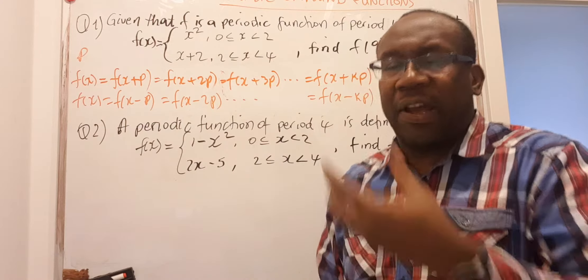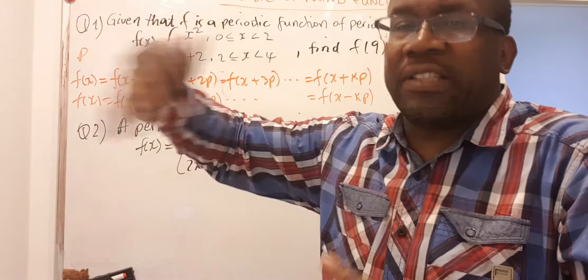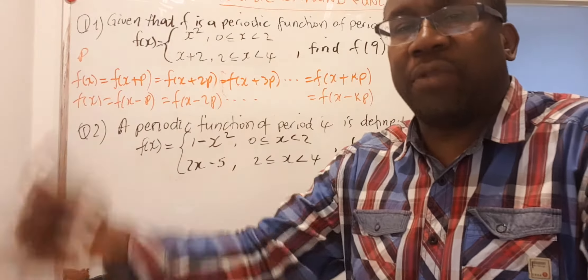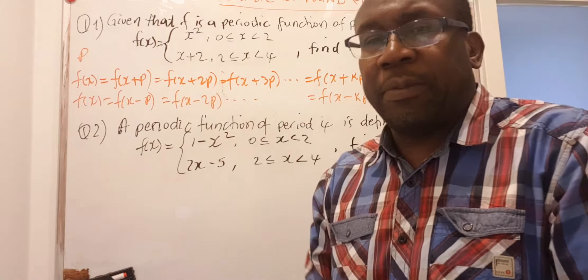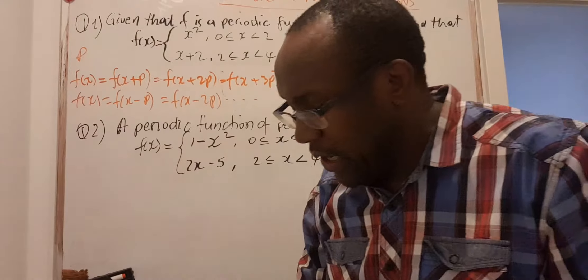Periodic function is a function that has a value, and that value repeats itself after a certain amount of the period. It could be one year, two years, three years, and so forth, depending on the period for that particular function. In this particular example, they say the period is 4. Let's look at it.